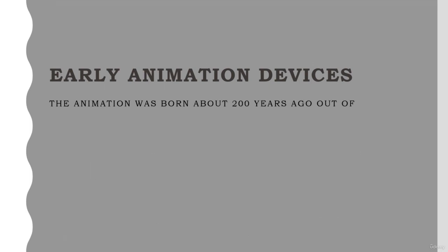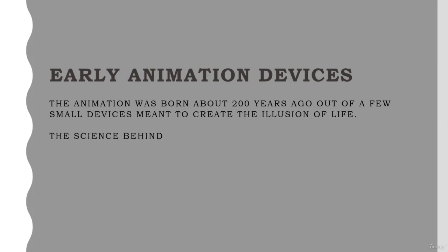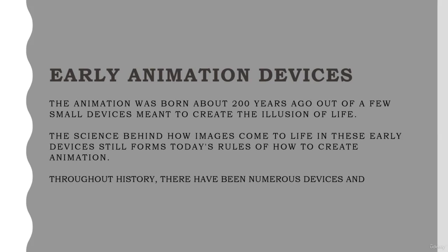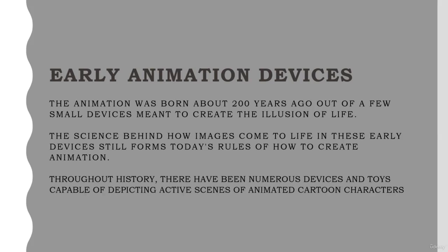Animation before film, 1600 to 1877. With the spread of the Industrial Revolution in Europe and North America in the 18th and 19th centuries came experimentation with machines that would make images appear to move. The animation was born about 200 years ago out of a few small devices meant to create the illusion of life. These devices produced the very first moving pictures, and the science behind them still forms today's rules of how to create animation. Interestingly, the first live-action movie projectors also came from these devices.